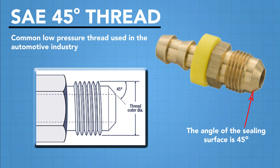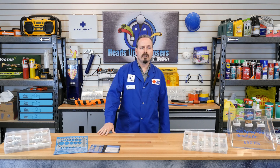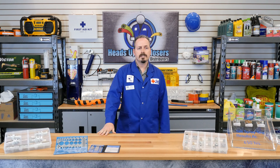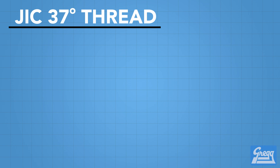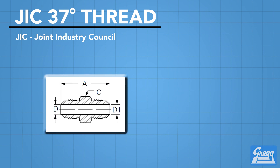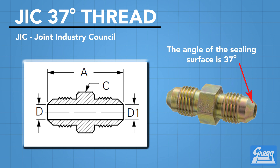But as hydraulic systems increased in pressure, there was a need for a higher performing thread — that was the invention of JIC 37-degree thread. A Joint Industrial Council, which is what JIC stands for, got together and actually created this thread for the industry.